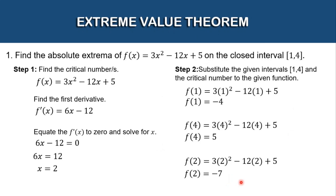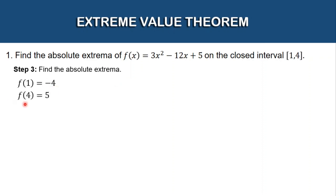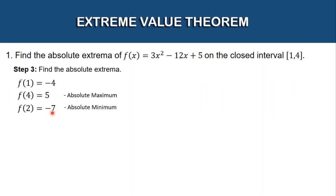That is step number 2. For step number 3, we find the absolute extrema — meaning the minimum and the maximum. Looking at our three values: f(1) = −4, f(4) = 5, and f(2) = −7. The highest value is 5, so this is our absolute maximum. Let's look at the graph of our function on the interval 1 to 4 and see where the absolute maximum and absolute minimum appear.